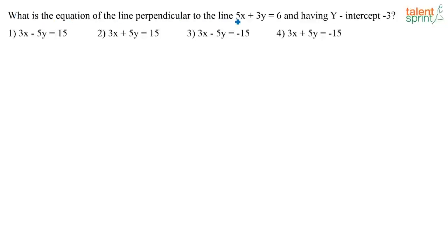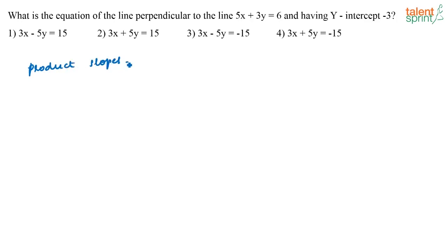What is the equation of the line perpendicular to the line 5x plus 3y is equal to 6 and having y-intercept minus 3? So when do we say that two lines are perpendicular to each other? We say that two lines are perpendicular to each other if the product of their slopes is equal to minus 1.